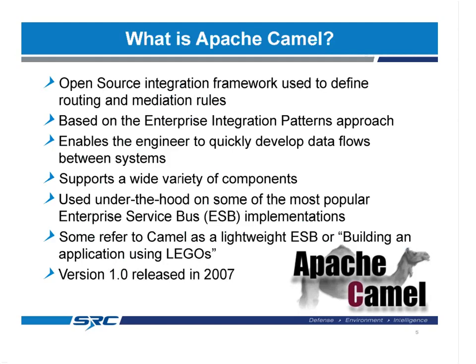So what is Apache Camel? It's an open source integration framework that makes heavy use of the enterprise integration patterns approach. You can very easily — in either code or using XML configuration files — develop and define your data flows. There's a wide range of components you can use, such as interacting with web pages, email servers, or file systems. Camel is used by a couple of different enterprise service classes that are out in release now, including some open source products. Once you start digging deep into them, you find that Camel is being used in quite a few of them.